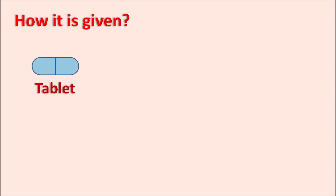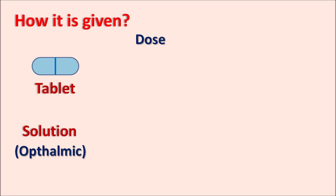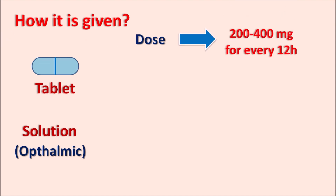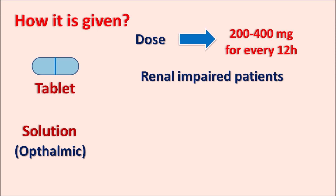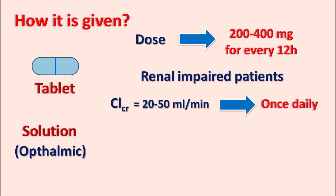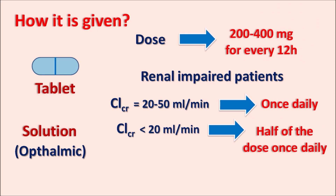How is it given? Ofloxacin is available as a tablet for oral administration and also as a solution for ophthalmic use. The dose ranges from 200 to 400 mg given every 12 hours (twice daily), depending on the clinical indication. In patients with renal impairment with creatinine clearance between 20 and 50 mL/min, the dosing interval is adjusted to once daily. When creatinine clearance is less than 20 mL/min, both dose and dosing interval are modified — half the dose given once daily at 24-hour intervals.